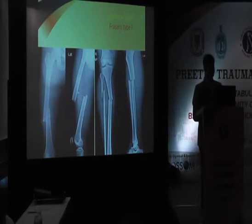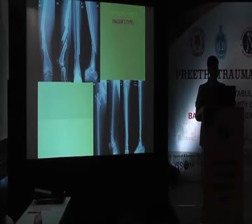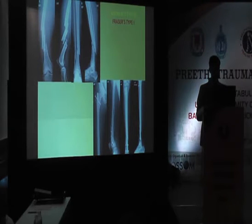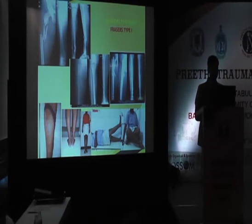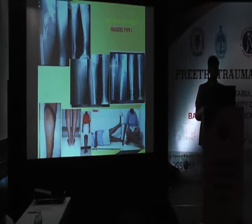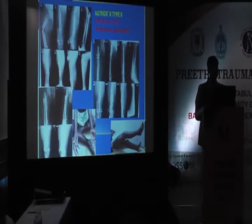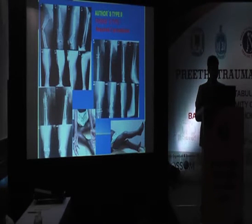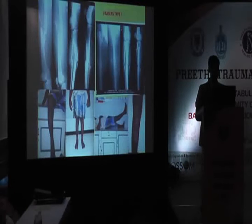Looking at case examples: Fraser type 1 is also author's type 1 with no issues. Another Fraser type 1 injury with segmental involvement — not considered in Fraser — becomes author's type 2. This patient was managed in one procedure but may sometimes need multiple procedures. Another case is Fraser type 1 but author's type 2B because it was grade 3 open, needed split skin grafting for the tibia, and M3 because hip and ankle were involved. Another example: Fraser type 1 where comminution, open injuries, and segmental involvement led to additional augmentation with plate and bone grafting, with a satisfactory outcome.